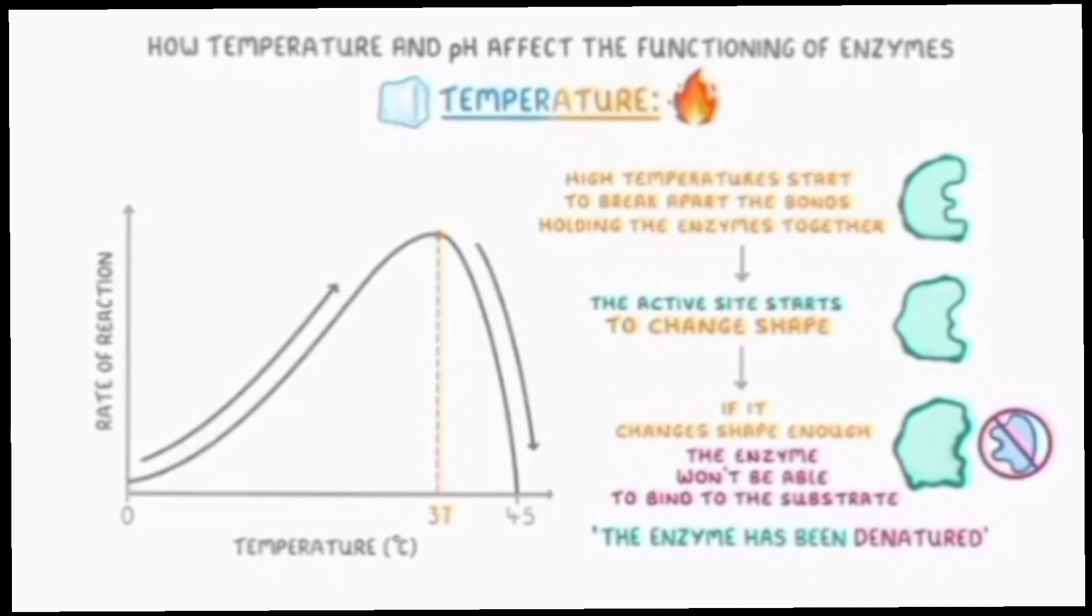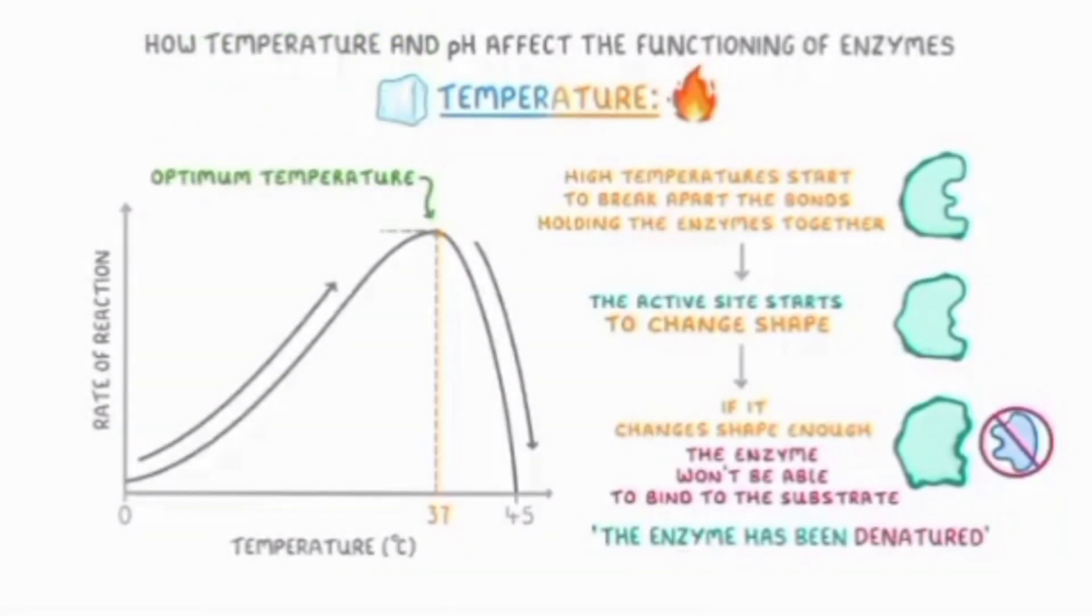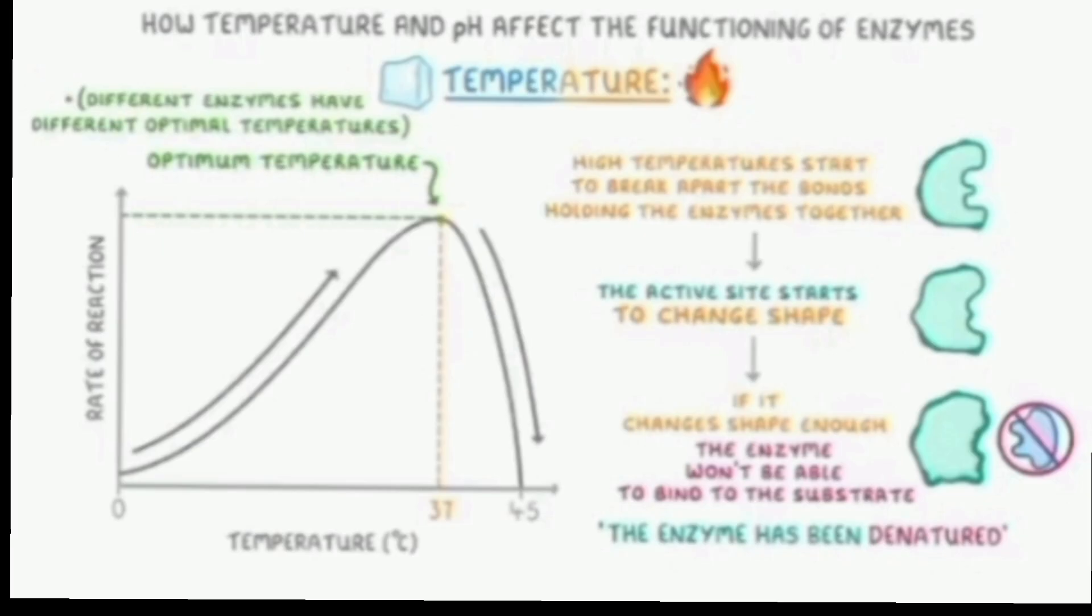Now let's see what is optimum temperature. This is the temperature where the rate of reaction of any enzyme catalyzed reaction is highest. In this graph, you can see that the rate of reaction is highest at 37 degrees centigrade. So the optimum temperature of this enzyme is 37 degrees centigrade.